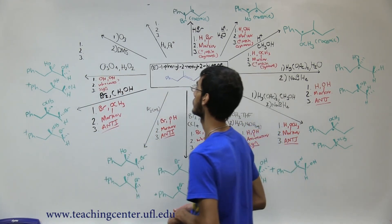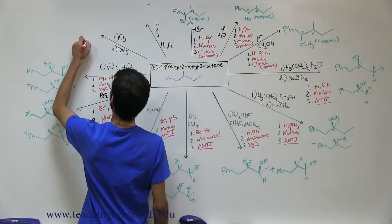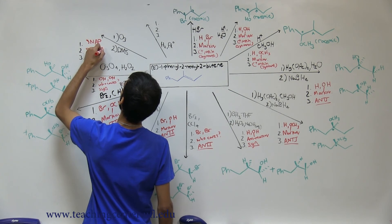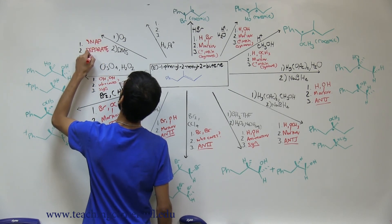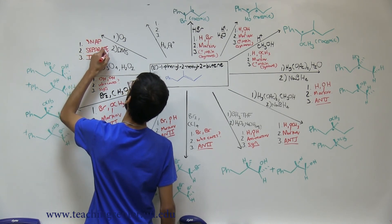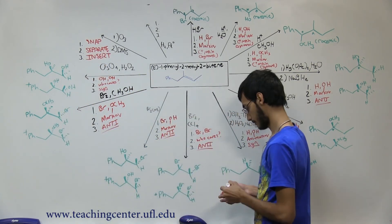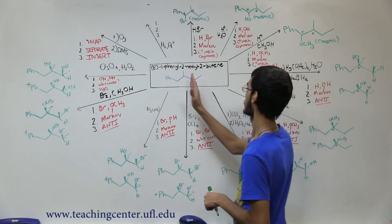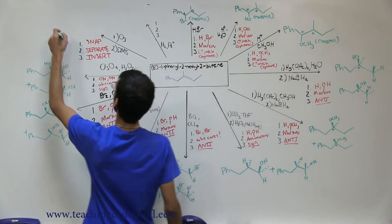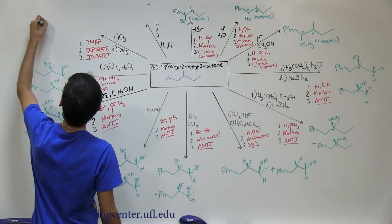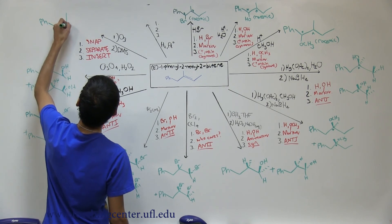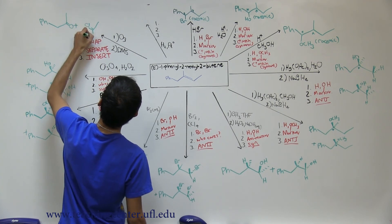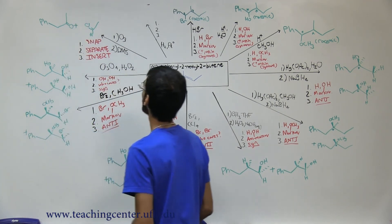The next reaction is ozonolysis. The 1-2-3s: first we snap the double bond, then we separate, then we insert oxygens. For our products, we snap the double bond, separate the fragments, and insert an oxygen on each carbon. That gives us two carbonyl-containing products.